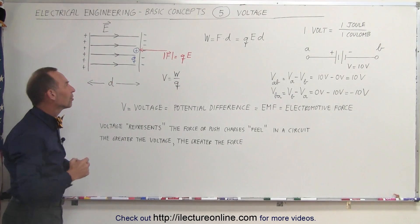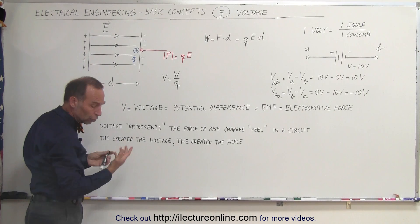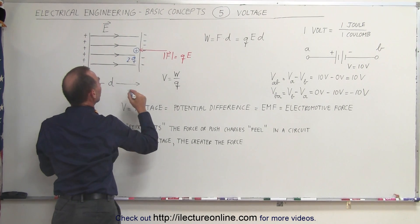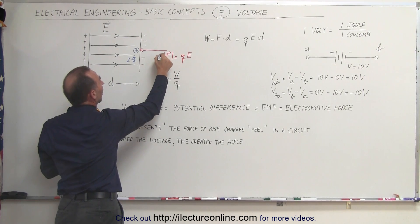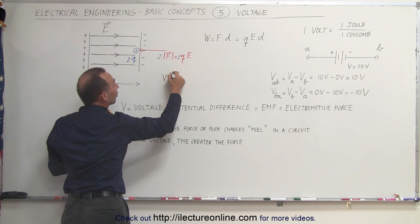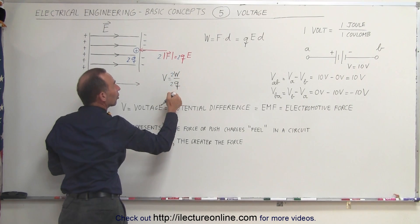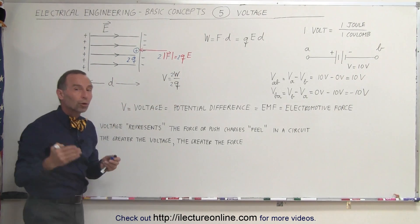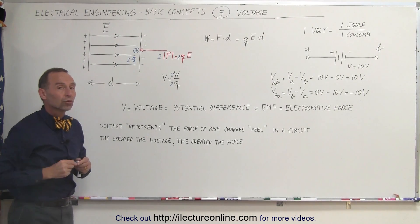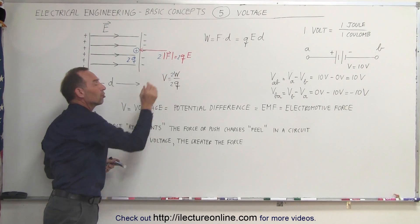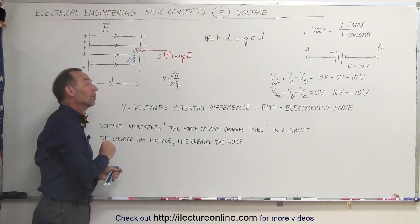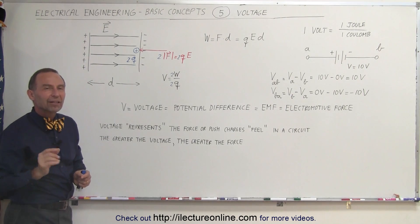That makes sense because let's say the charge was twice as big. If we have twice the charge, we then require twice the force, therefore twice the work, and you see that ratio will always be the same regardless of the size of the charge we use. So it's always the ratio of the amount of work done divided by the charge used, and regardless of how big we make that charge, that ratio is always the same — and that is defined as the voltage.